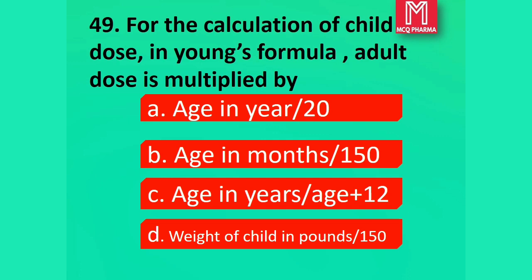Question number 49. For the calculation of childhood dose in Young's formula, the adult dose is multiplied by: Option A, Age in year by 20. Option B, Age in month by 150. Option C, Age in year by age plus 12. Option D, Weight of child in pound by 150. Correct answer: Option C, Age in year by age plus 12.